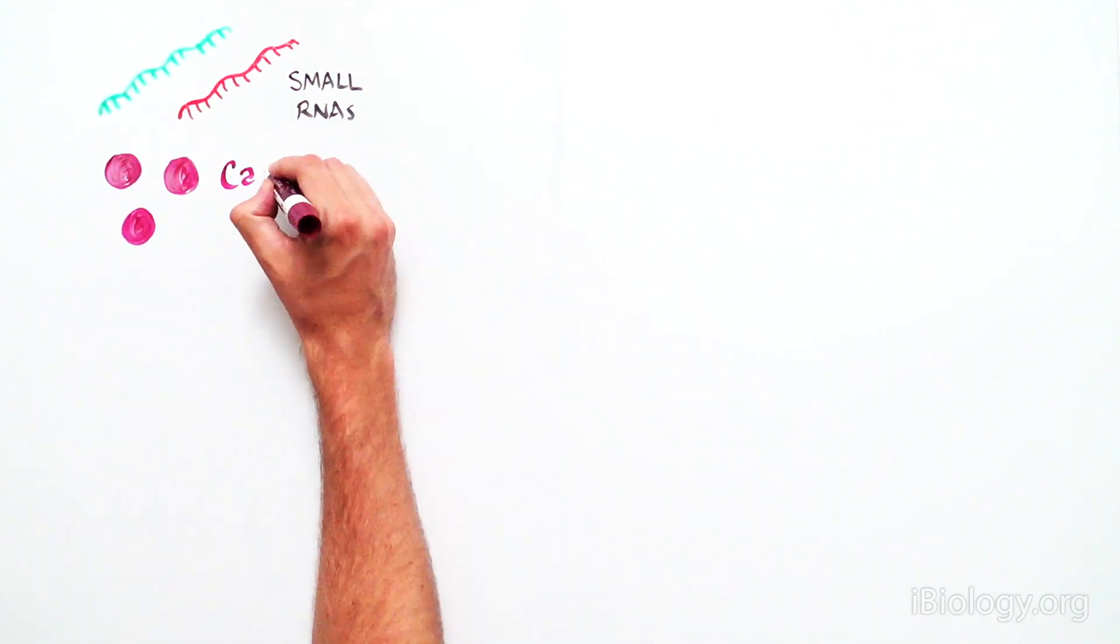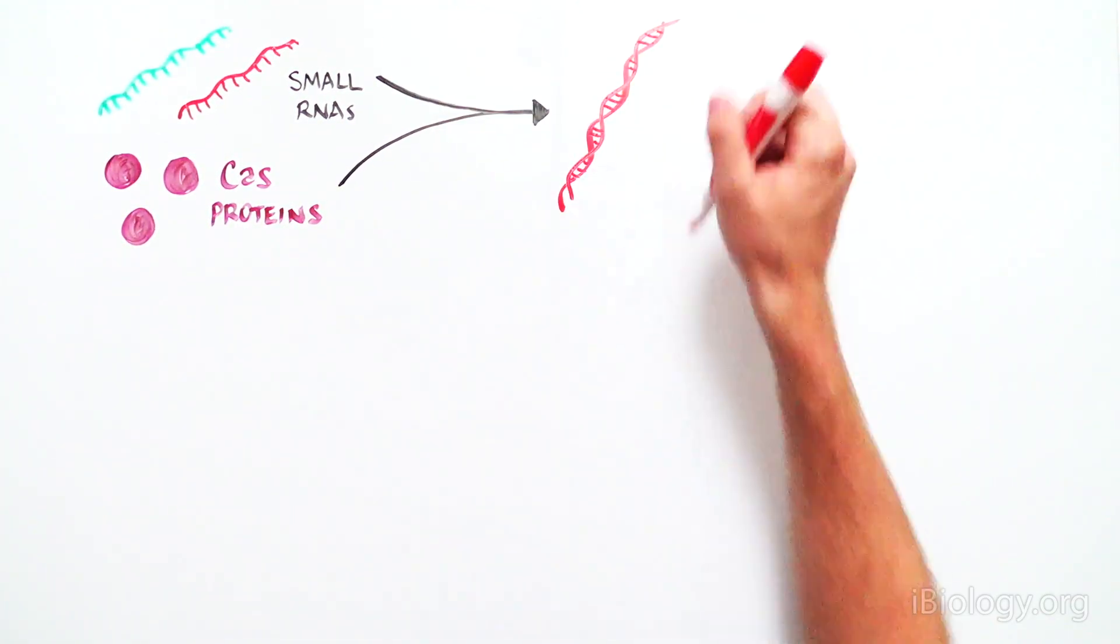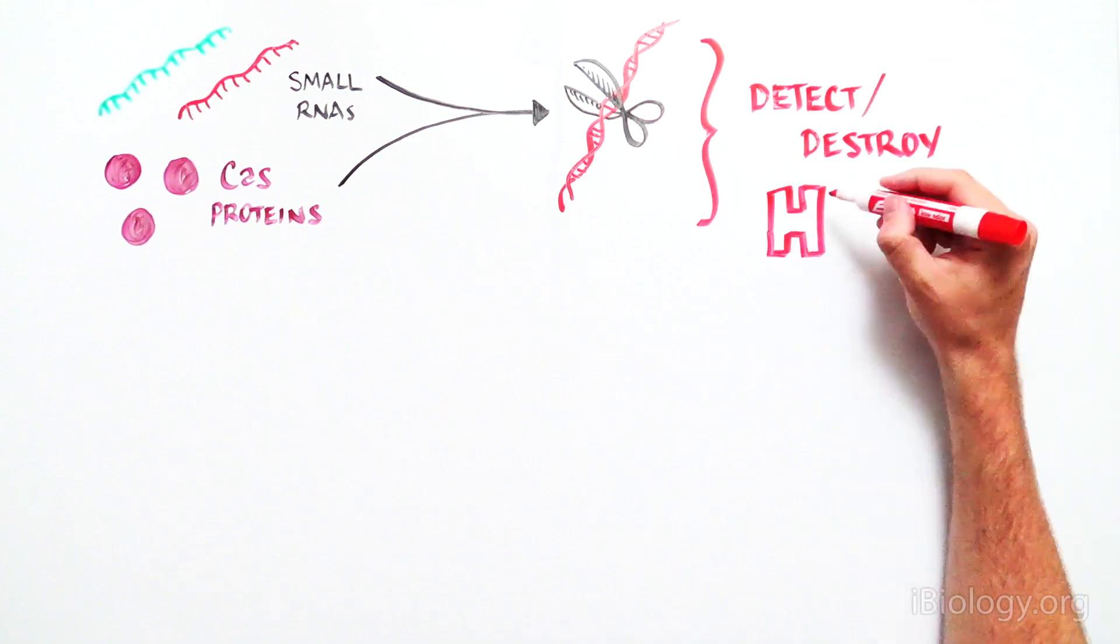But many questions still remained. How did the small RNAs and Cas work together to detect and destroy viral DNA?